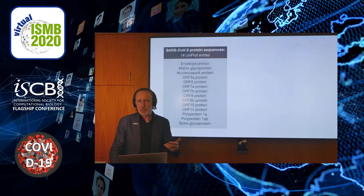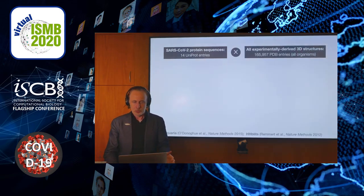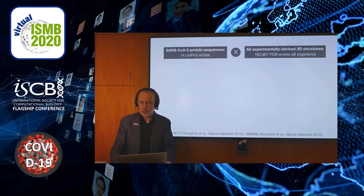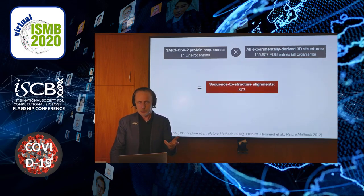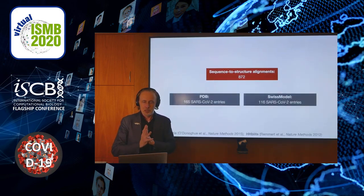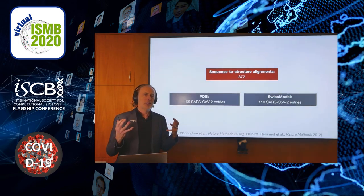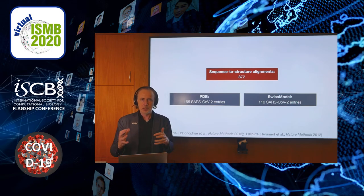Our study began with 14 UniProt protein sequences. We then systematically matched all of those sequences to every available three-dimensional structure — about 170,000 across all organisms. This generated about 900 sequence-structure alignments, giving us about 900 structural templates. This gives us a wealth of detailed information about molecular mechanisms, but it also gives us a new problem: how do we make nearly 1,000 structures accessible and usable to people?